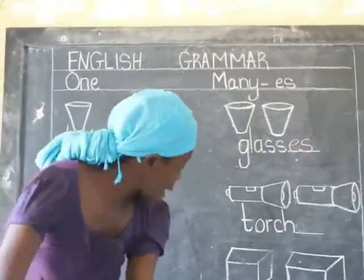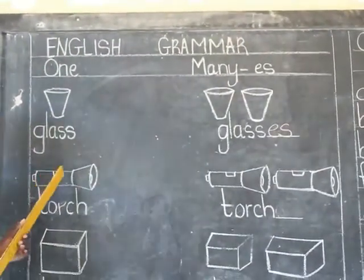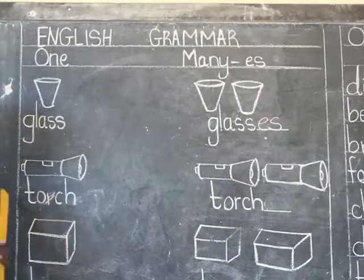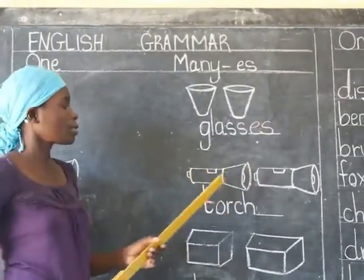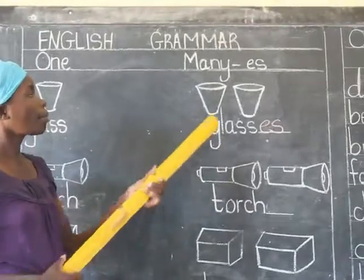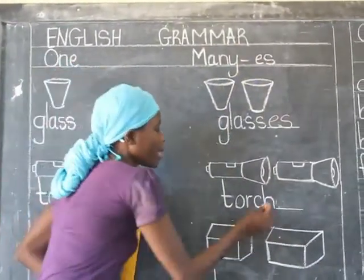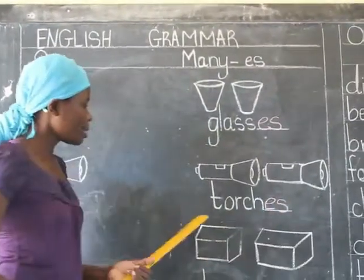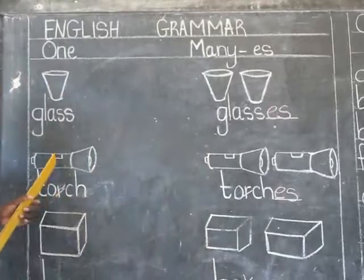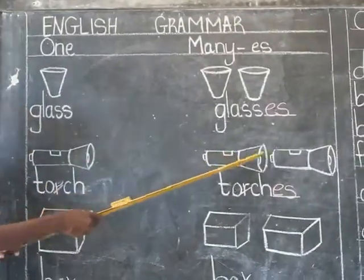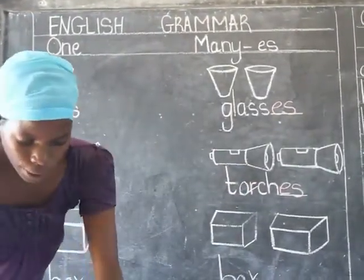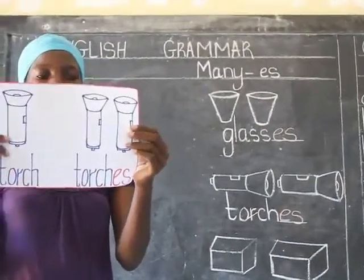Our second example is a torch. I have a drawing of a torch here and down here I have written torch. Note: the R is silent, we say torch. On the right side I have drawn two pictures of the same. I want to make them more than one, so I am going to add E and S. So I read: one touch, two touches. One touch, two touches.